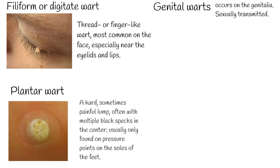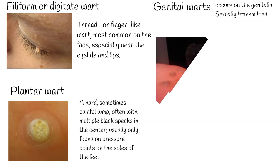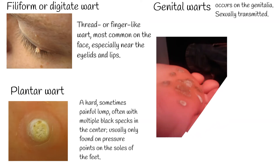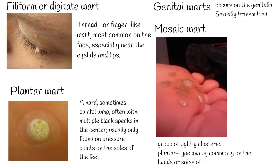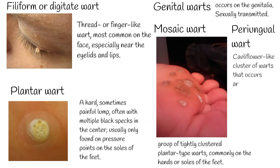Mosaic wart: a group of tightly clustered plantar-type warts, commonly on the hands or soles of the feet. Periungual wart: a cauliflower-like cluster of warts that occurs around the nails.